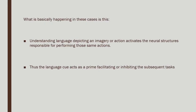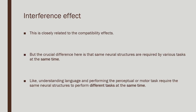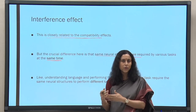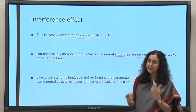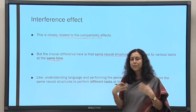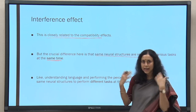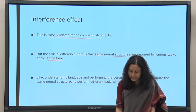What is basically happening is that understanding language depicting an imagery or action activates the neural structure. The opposite — interference — also happens. This is closely related to the compatibility effect; it is not a separate function but part of the same process. The crucial difference is that the same neural structures are required to do various tasks at the same time. When the prime sentence comes first and the target object follows, there is facilitation. However, if you are making the same neural structure busy at the same time doing two different things, you see interference.